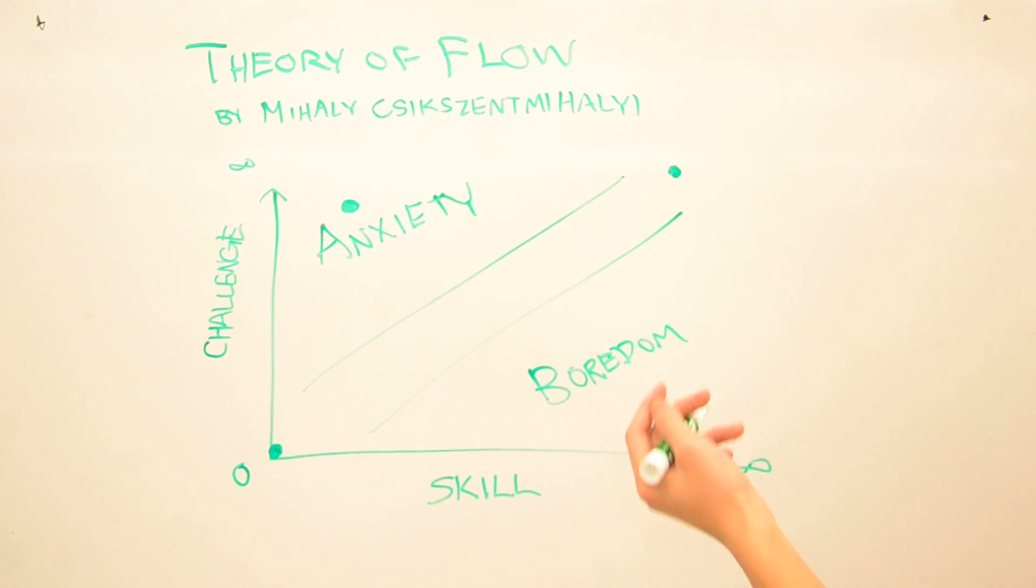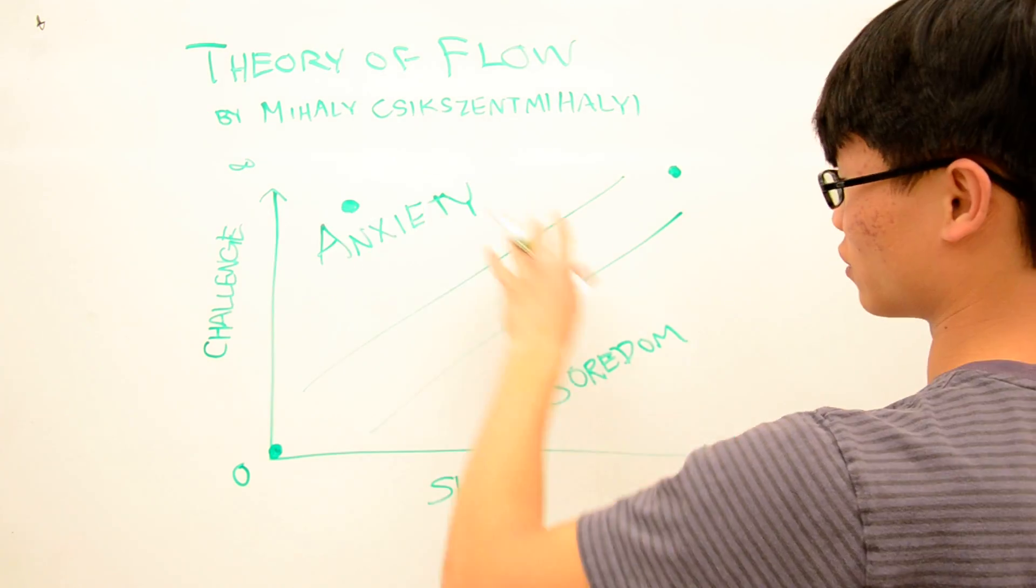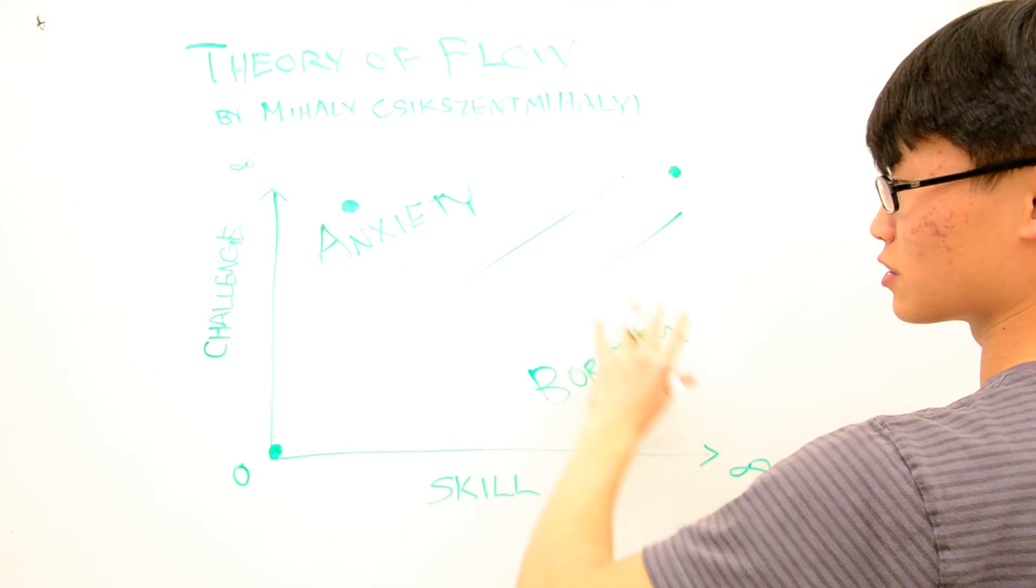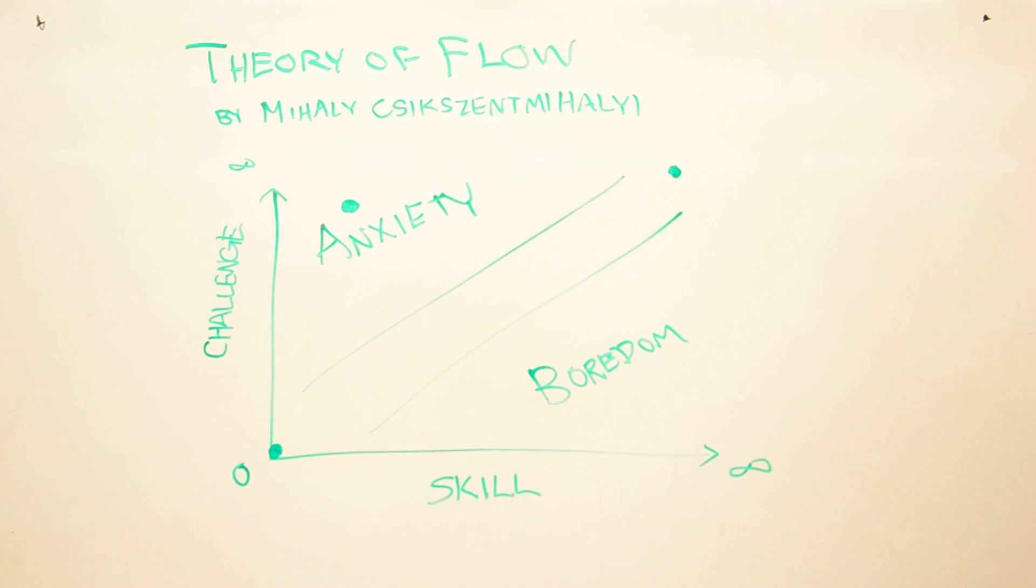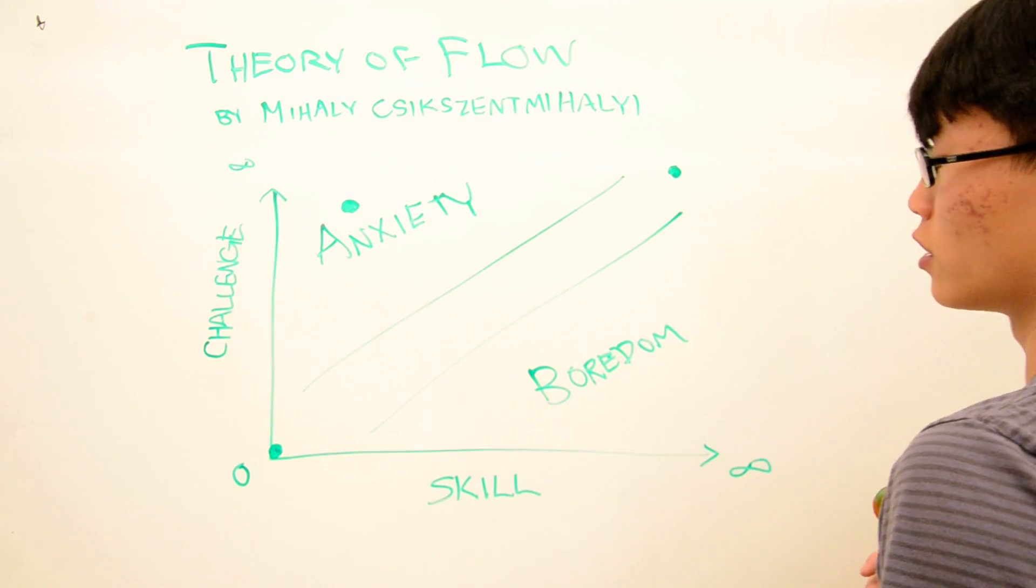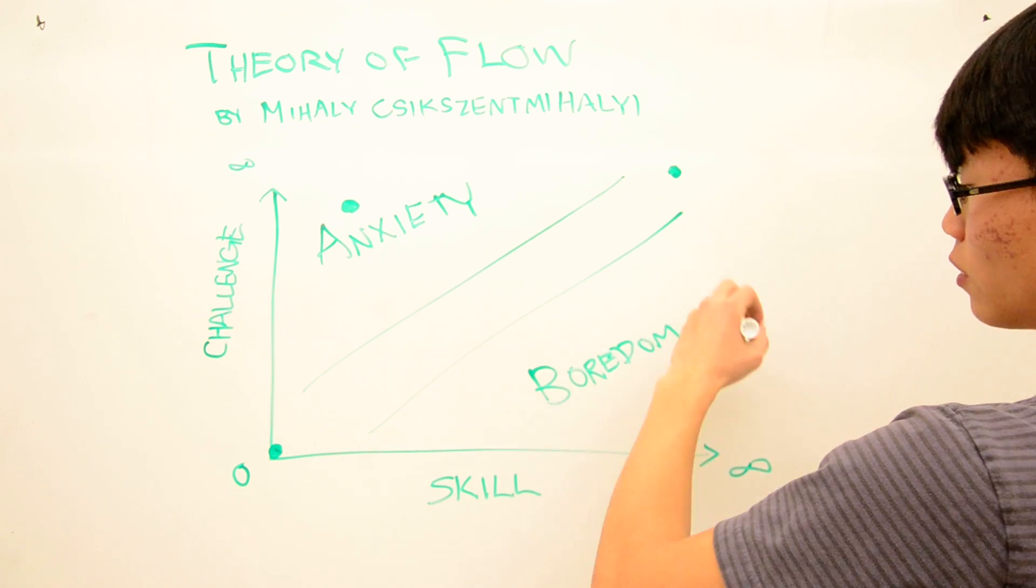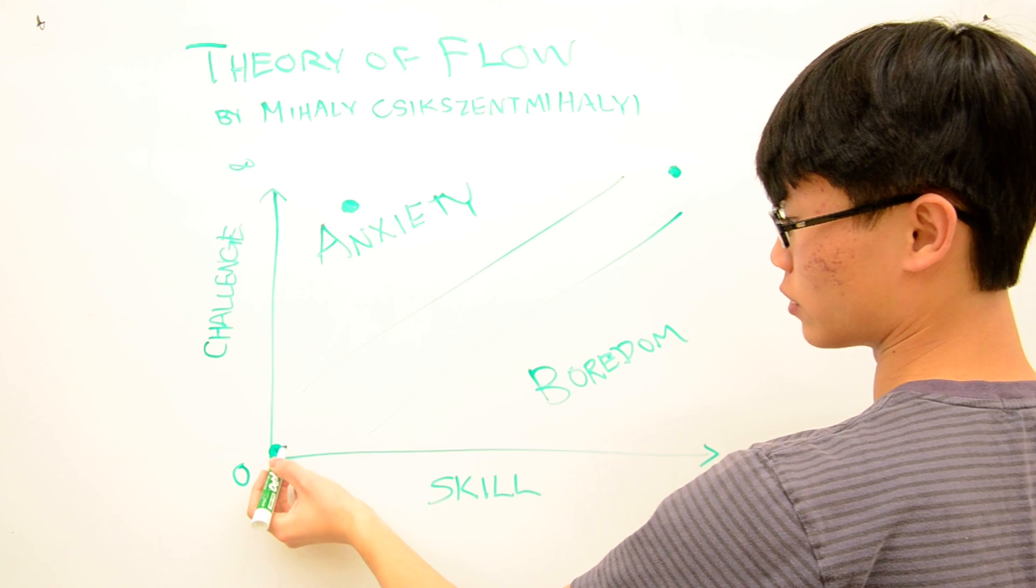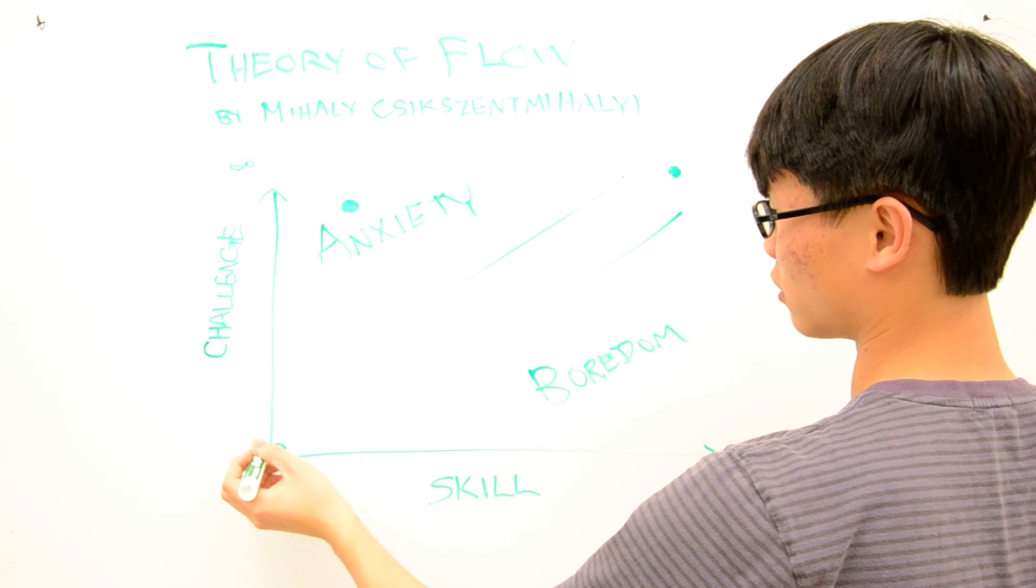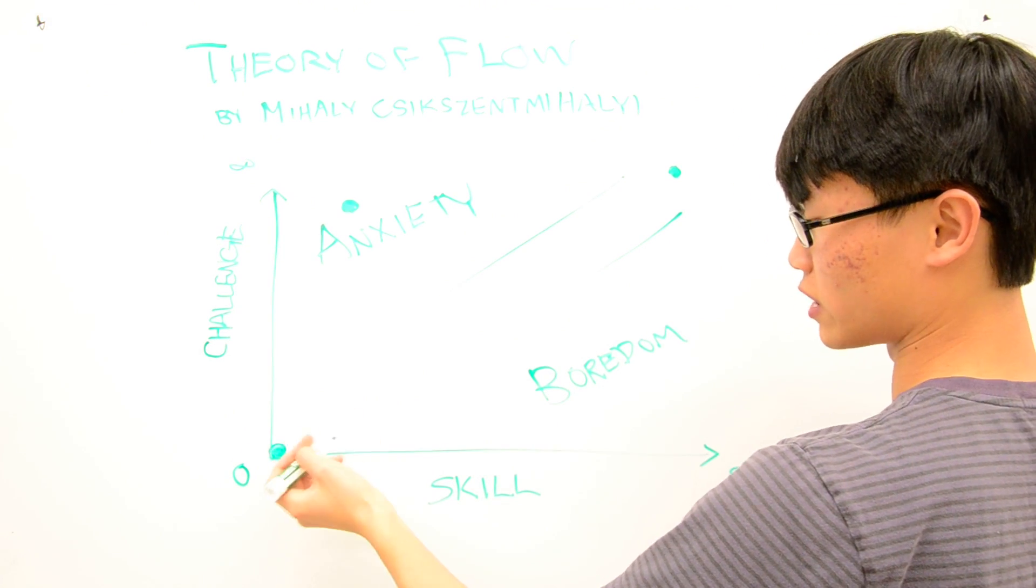Mihaly suggests that these aren't optimal experiences in any aspect of life, be it your work, your sports, your leisure, your relationships. You don't want to be in these regions, but you want to stay in this line. Actually, the best thing he proposes is that you start any activity at the start, like two tennis players, and you keep playing each other.